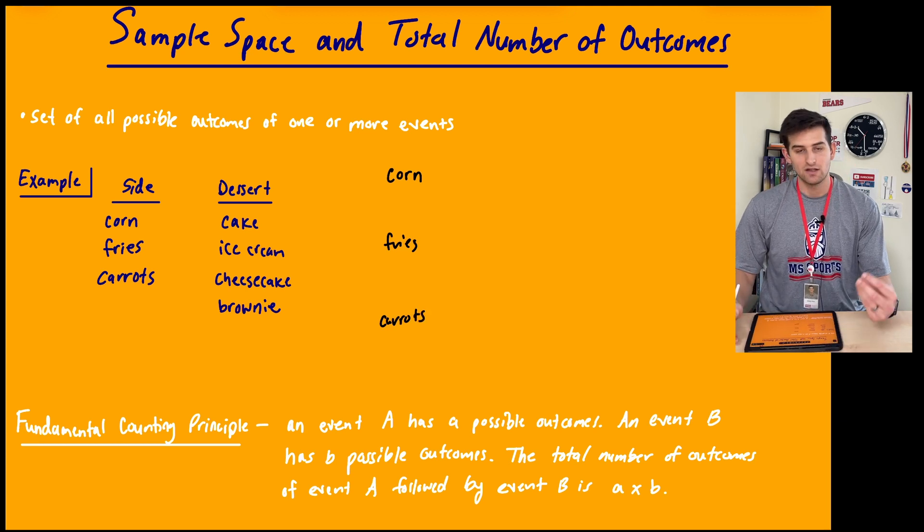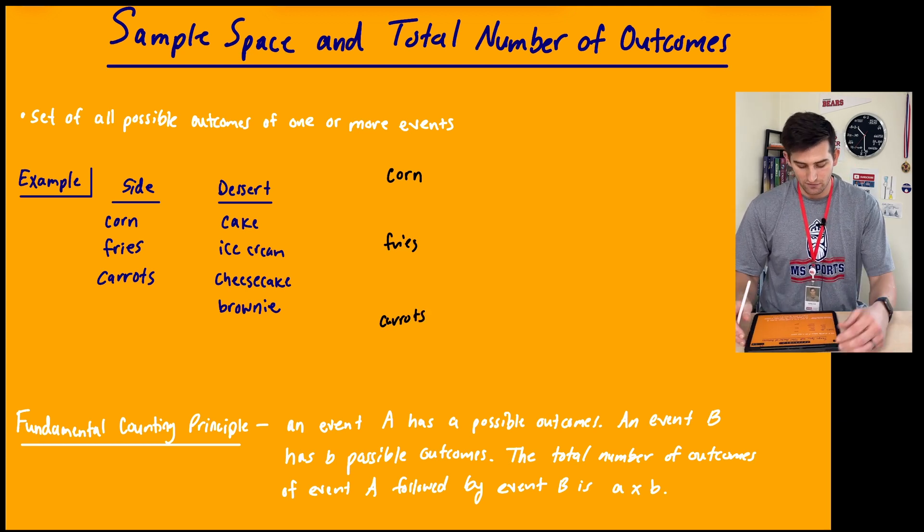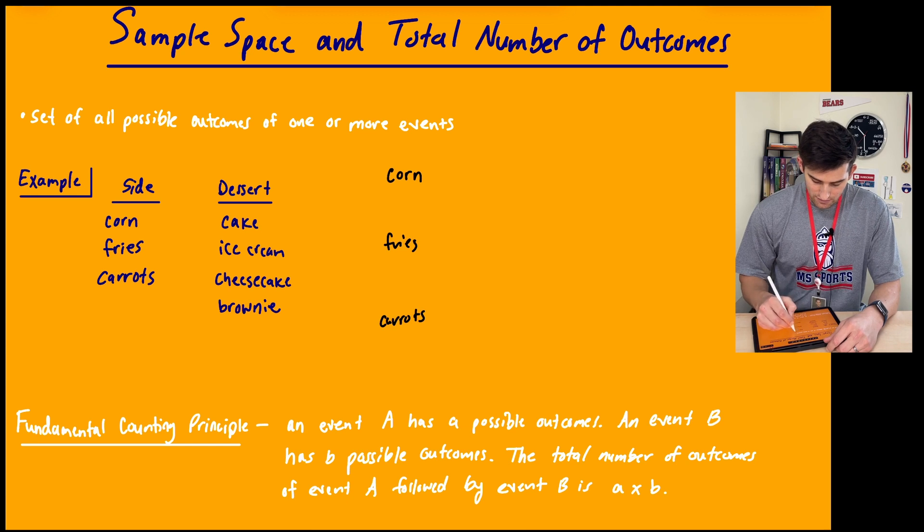So now if I get corn, how many different desserts could I get? Well, I could get four, right? We could get cake, we could get ice cream, we could get cheesecake, or we could get a brownie.